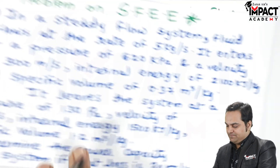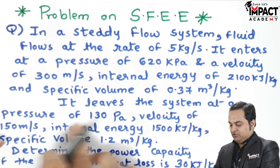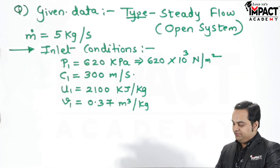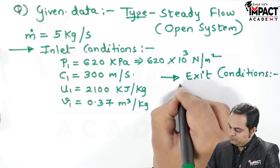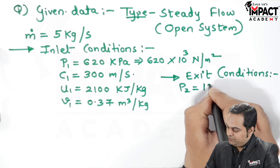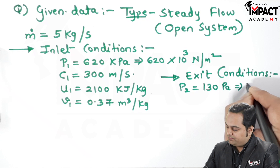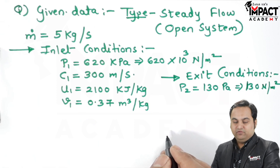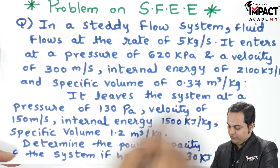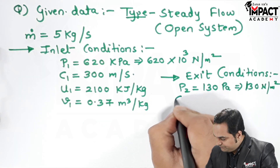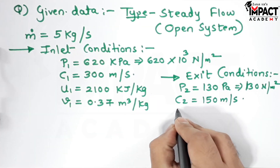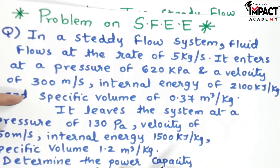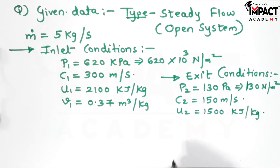Next, it leaves the system at a pressure of 130 Pascal, that is 130 Newton per meter square — these are the exit conditions. The exit velocity C2 is 150 meter per second, internal energy U2 is 1500 kilo Joule per kg, and specific volume v2 is 1.2 meter cube per kg.